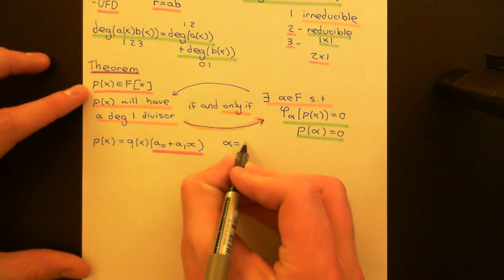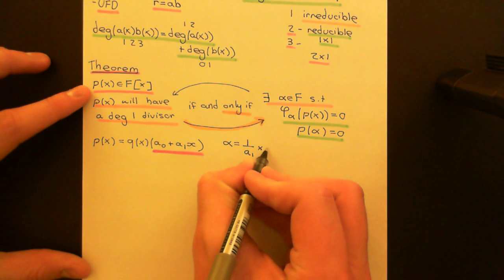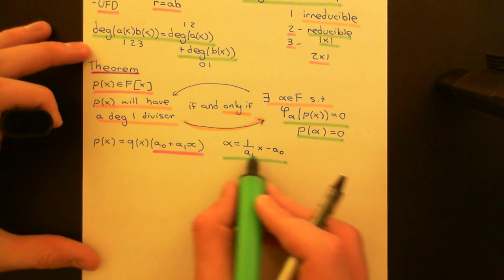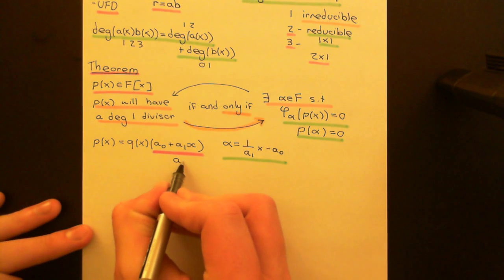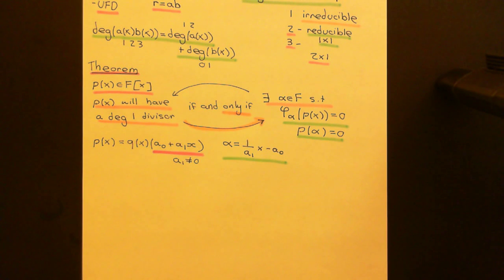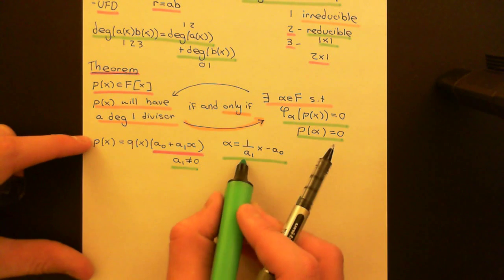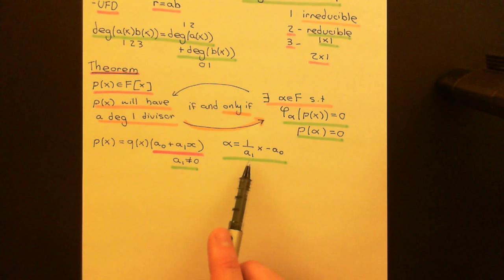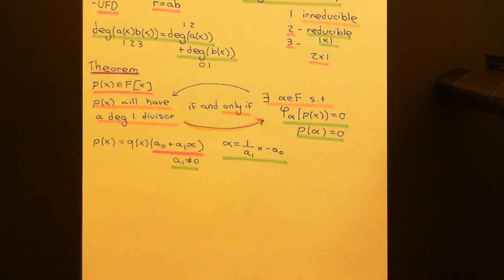I'm going to construct such an alpha by making alpha the multiplicative inverse of A1 times the additive inverse of A0. Now, A1 is not equal to 0 — if A1 were equal to 0, this wouldn't be a degree 1 polynomial. So its multiplicative inverse does exist; 1 over A1 makes sense because we're working in a field, so all non-zero elements have a multiplicative inverse. And of course all elements of a field have an additive inverse, so the additive inverse of A0 makes total sense. We can multiply those two elements together and call that alpha.